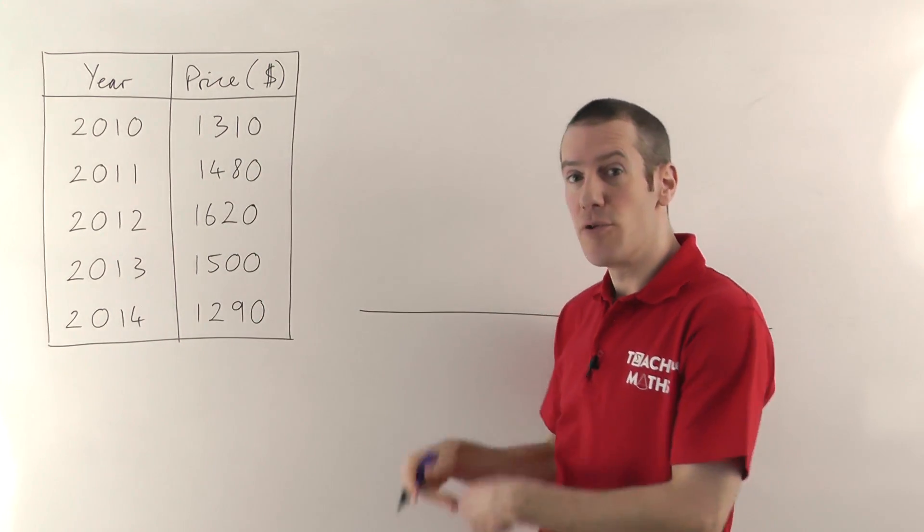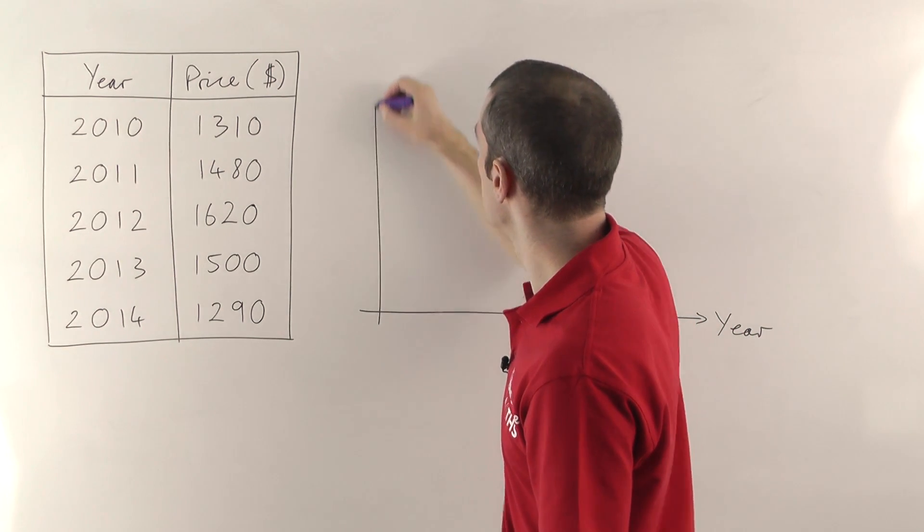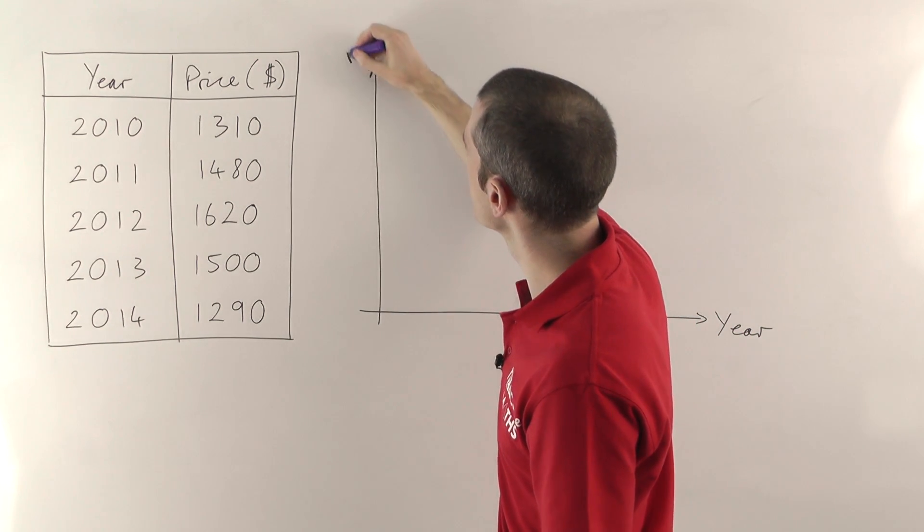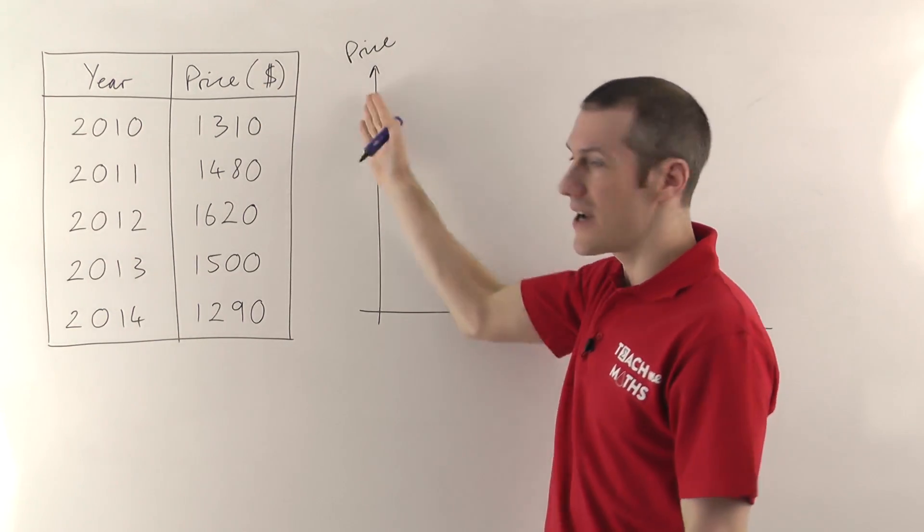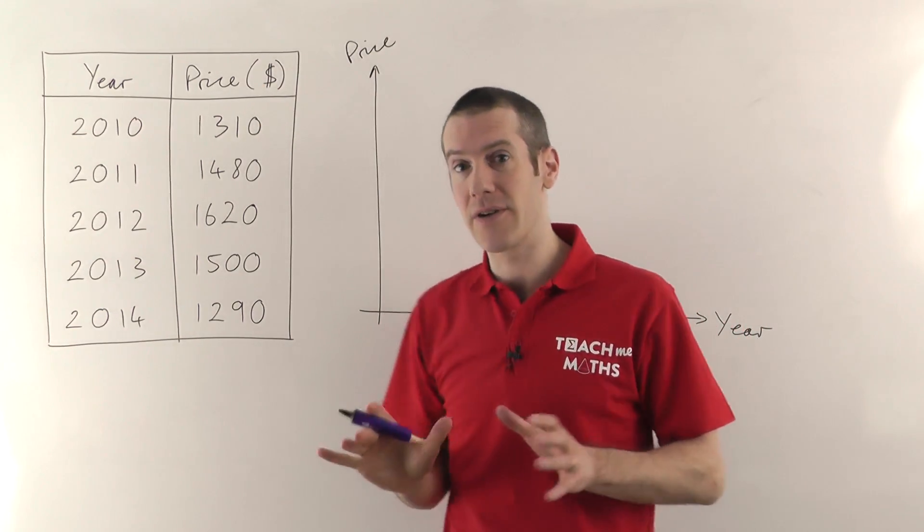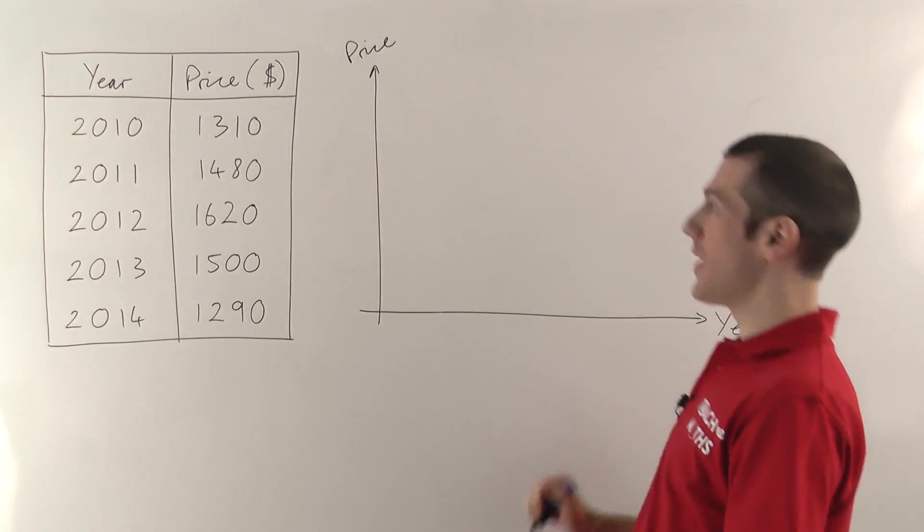Your other axis then, the thing that you measure, always goes up the side. So price in this case is going to go up here. And as I was saying, when you label your axes, and you must always label your axes for a line graph or any chart generally, so price here, year for that one.